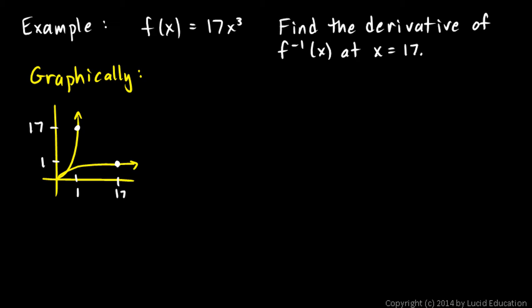And you can see that these two functions, this is f right here, and this is f inverse. Those two functions are a reflection of each other across the line y equals x. And notice the switching in the x and y values. This is the point 1 comma 17, and this is the point 17 comma 1.